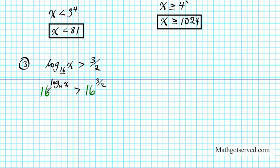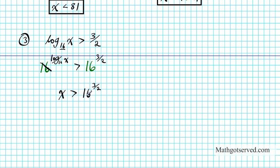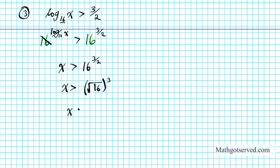On the left side we have the inverse relationship — the exponent and logarithm cancel out. So we have x is greater than 16 to the 3 halves power. Now we're going to use the rational exponents property to simplify this. This becomes x is greater than the square root of 16 raised to the 3rd power. The square root of 16 is 4, so we have x is greater than 4 to the 3rd power. 4 to the 3rd power is 64, so x is greater than 64 is our final result.